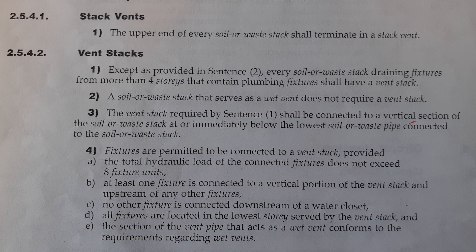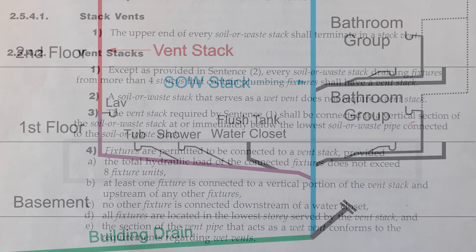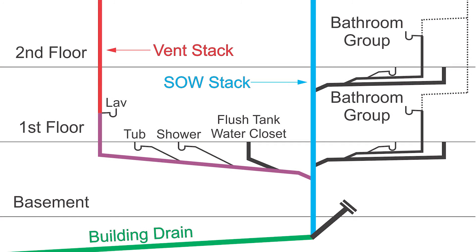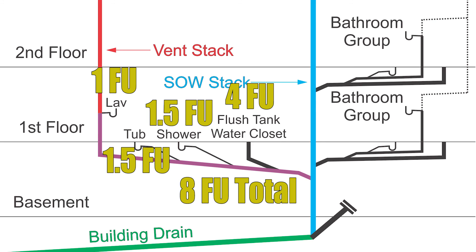The last clause is broken up into a number of parts. Clause 2542, 4A: fixtures are permitted to be connected to a vent stack provided the total hydraulic load of the connected fixtures does not exceed 8 fixture units. Looking at this example, we see a flush tank water closet at 4 fixture units, a shower at 1.5, a tub at 1.5 fixture units, and a lav at 1 fixture unit. Adding those up, we have 8 fixture units — the absolute maximum we're allowed to drain into this vent stack.